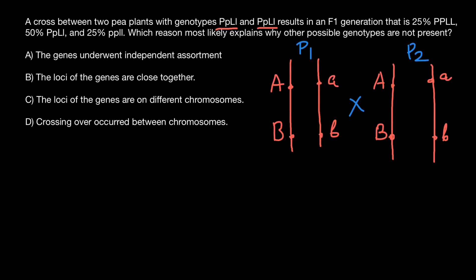Now, what are we going to see in the F1 generation? If we assume that no crossing over happens between gene A and B — imagine these genes are so close on the chromosome that no crossing over occurs — then parent one can only produce two variants of gametes: either this chromosome or this chromosome. Parent two can also only produce two variants, and no crossing over happens because gene A and B are very close together on the same chromosome.